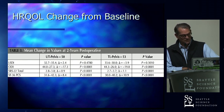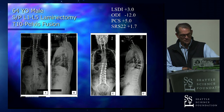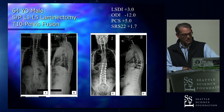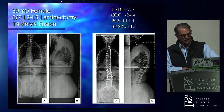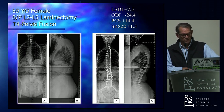The SRS-22 total score and the PCS functional score from SF-36 both went up significantly for both groups. Example cases: a T10-to-pelvis fusion patient whose LSDI changed modestly, increasing by three, but ODI down 12 and PCS up 5. A woman fused to the upper thoracic spine whose LSDI increased a relatively modest 7.5 points, ODI down 24, and PCS up 14.